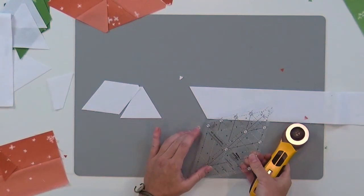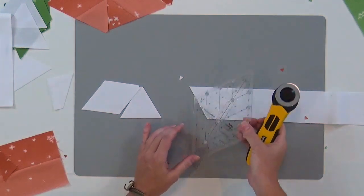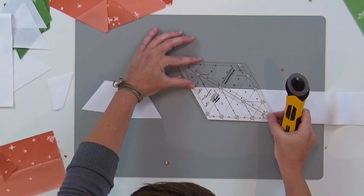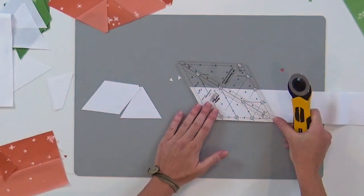If I wanted to do a parallelogram from this, I would just cut this way. This gets me a four and a half inch parallelogram. That's used in one of the bead blocks.